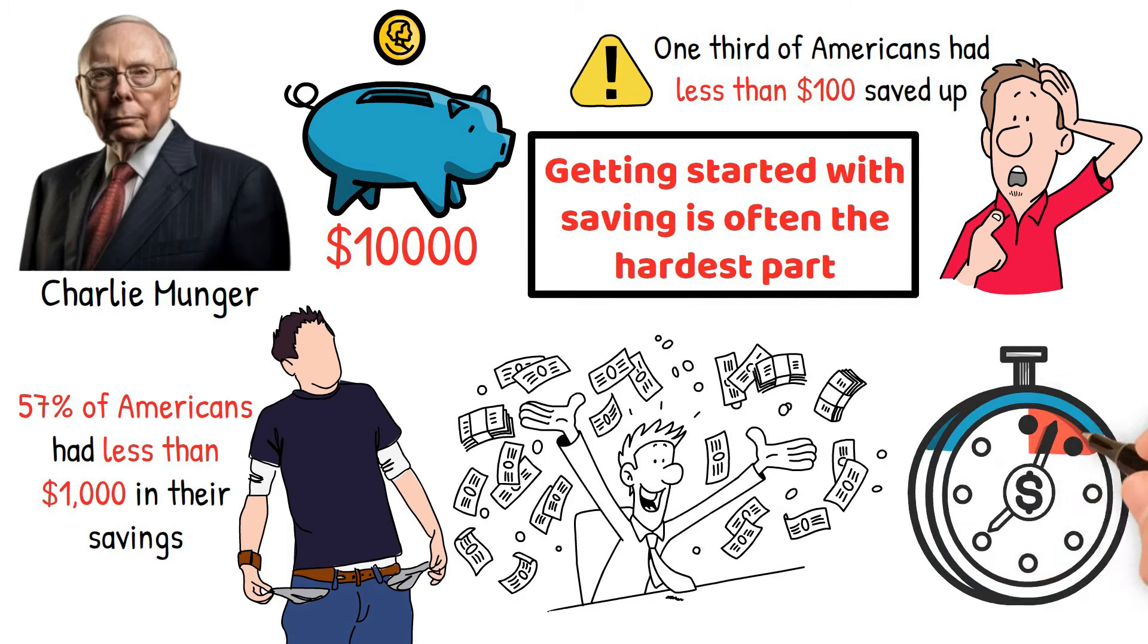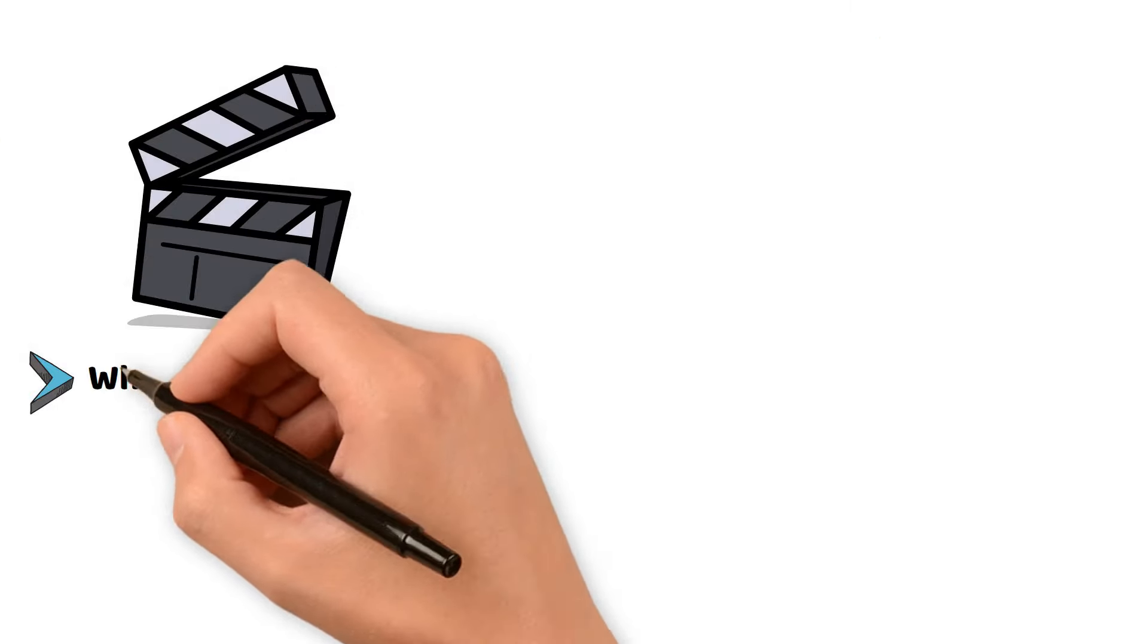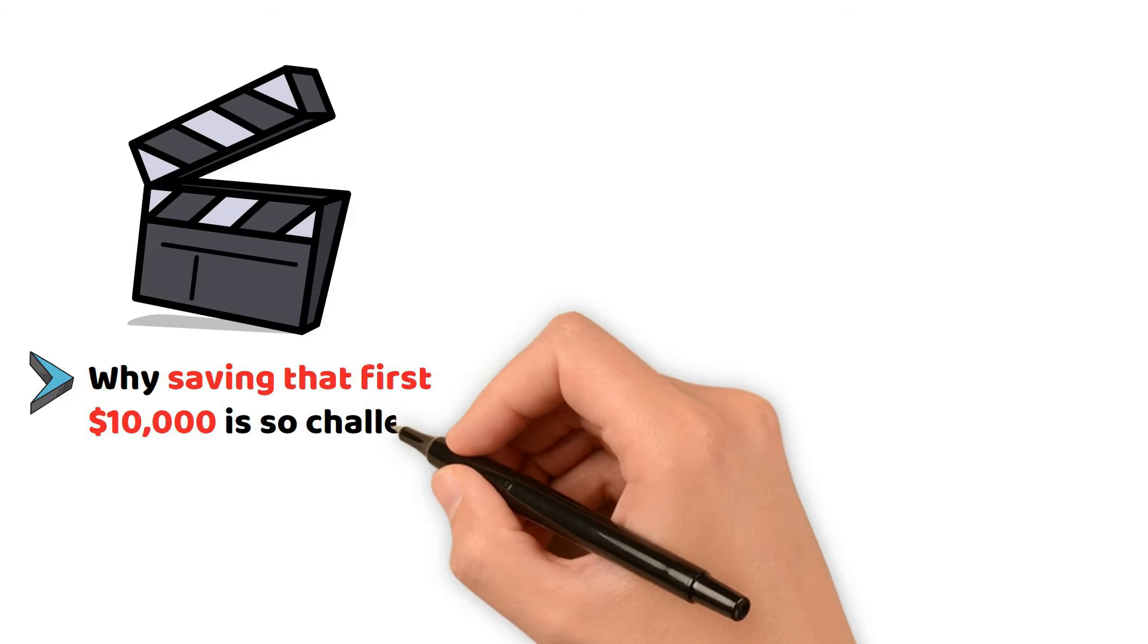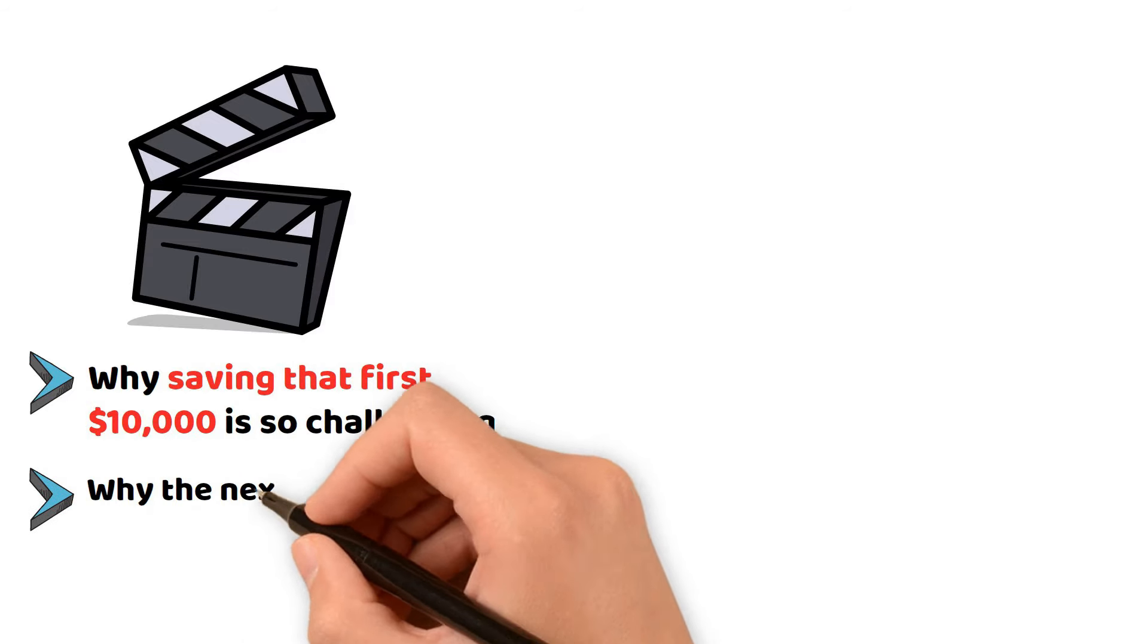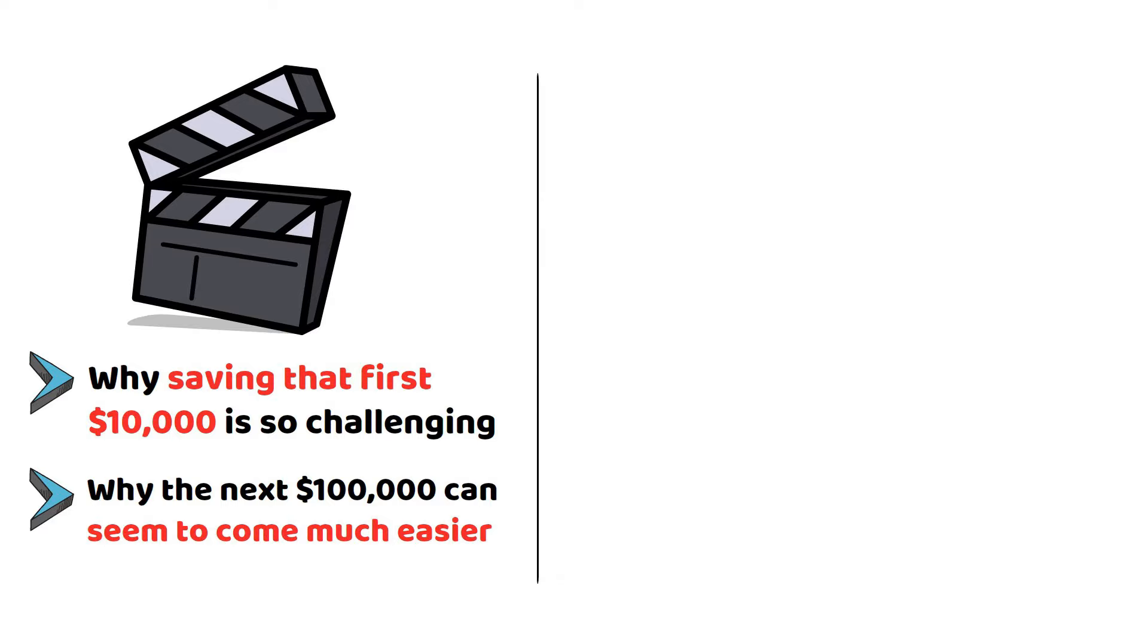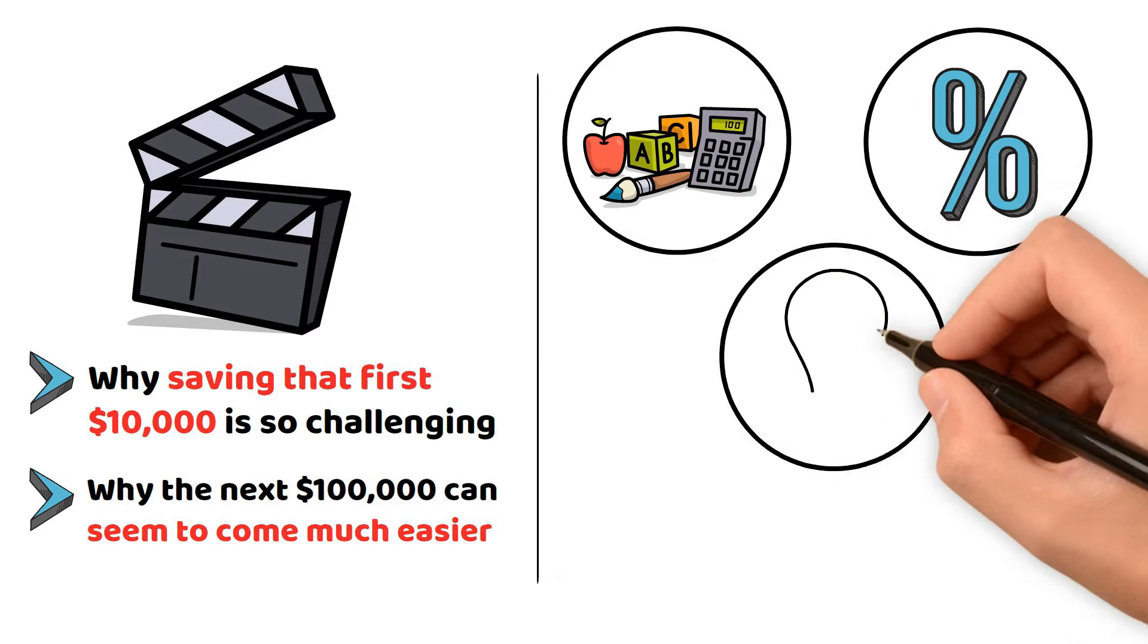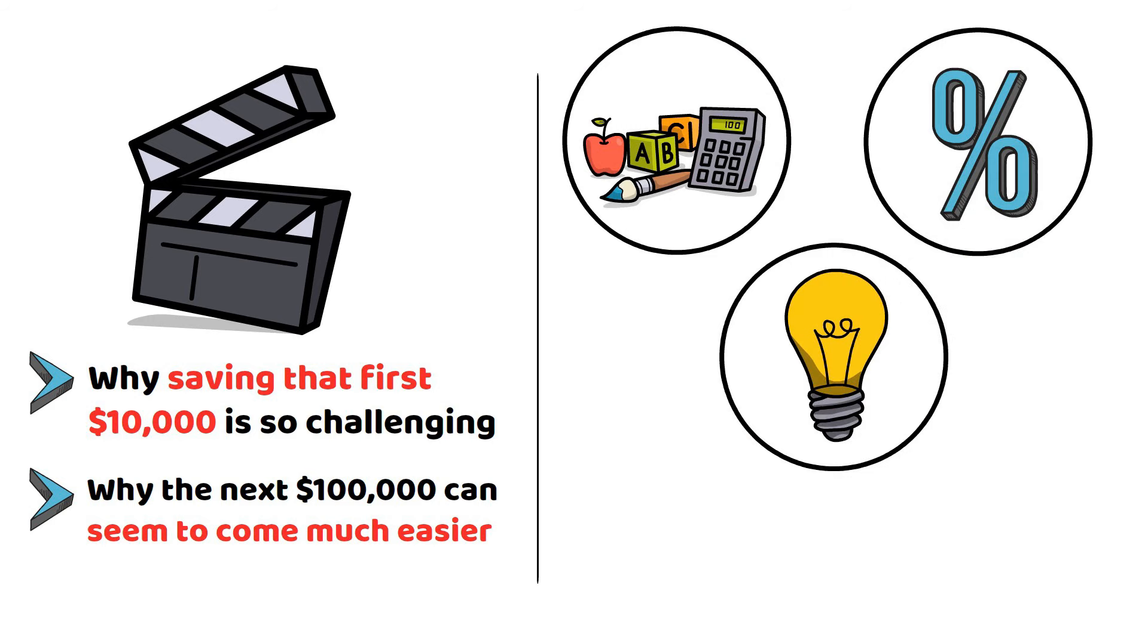Well, it all comes down to how money works for you over time. In today's video, we're going to discuss exactly why saving that first $10,000 is so challenging, and why the next $100,000 can seem to come much easier. We'll break down the math behind it, explain how compound interest kicks in, and give you practical tips to make saving easier, no matter where you are on your financial journey.